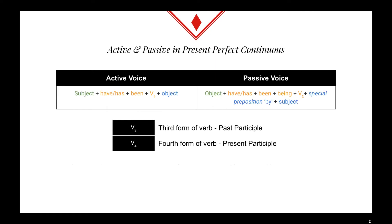Here, in the given table, we elaborate the rules of the active and passive voice, and then we will look at some examples in the present perfect continuous tense.